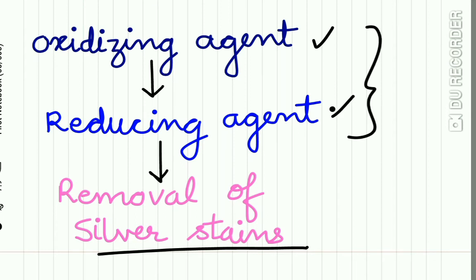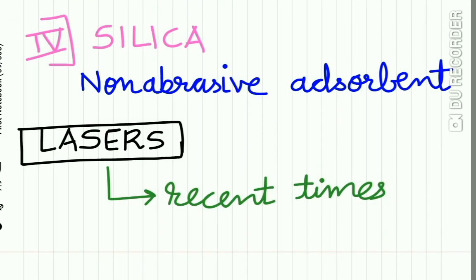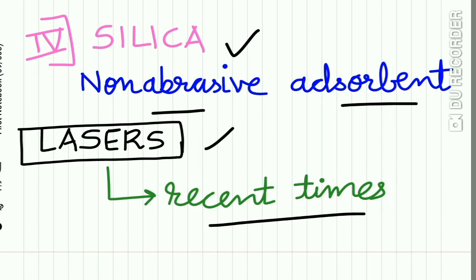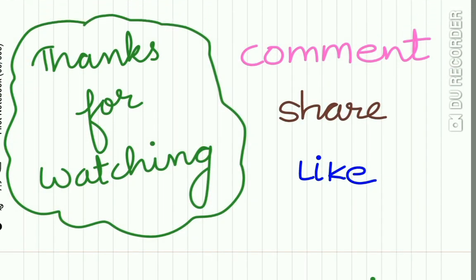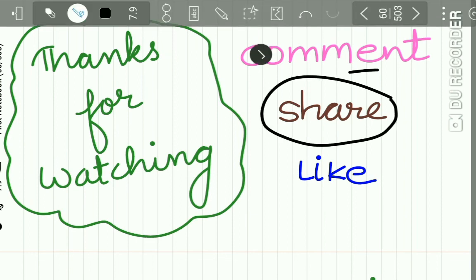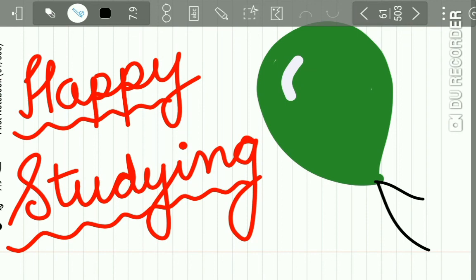The final bleaching agent is silica, which is a non-abrasive absorbent that absorbs stains. Recently, lasers are commonly used for whitening of the tooth. This completes our discussion on mummifying agents and bleaching agents. Thanks for watching — do comment and share your feedback, and share these lectures with your friends. Happy studying!